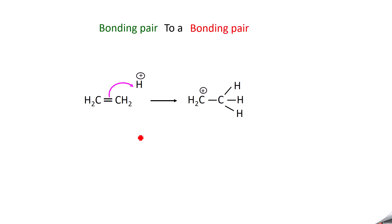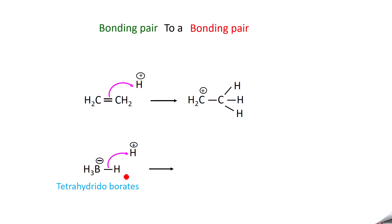Another example: tetrahydroborate, which has a bond between boron and hydrogen. Take H⁺ ion — the bond between boron and hydrogen shifts to H⁺ ion, so this bond breaks, giving BH₃ separated, and a new bond forms between hydrogen and hydrogen. So one bonding pair becomes another bonding pair — this is the third type of electron movement. In the next video we will do the inductive effect. Thank you for watching.